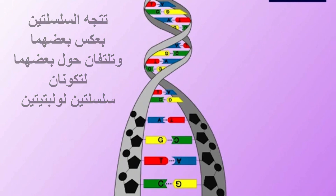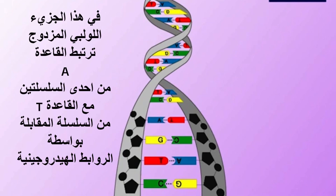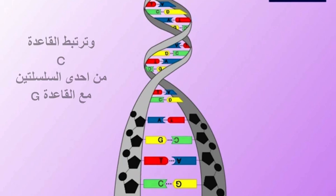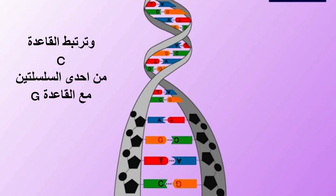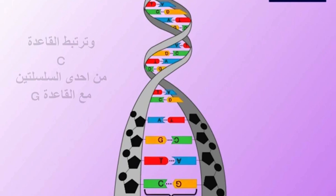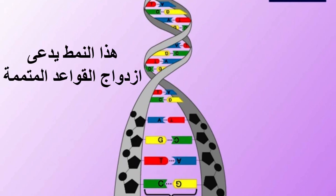In this double helix, the base A of one chain pairs with the base T of another chain by hydrogen bonds, and the base C pairs with the base G. These rules are called complementary base pairing.